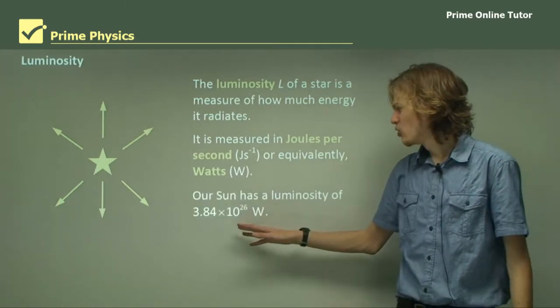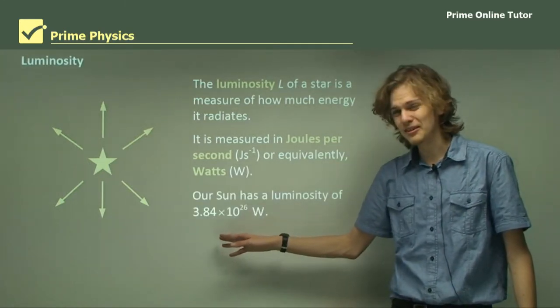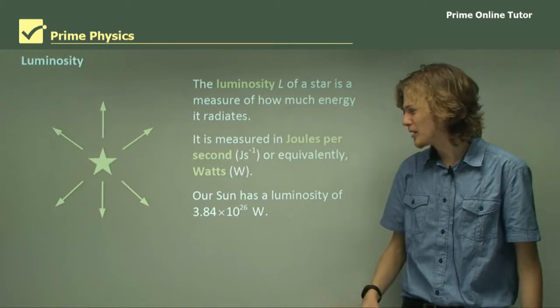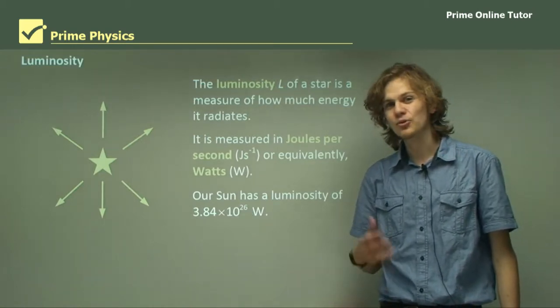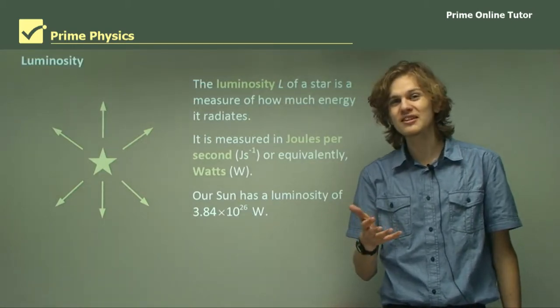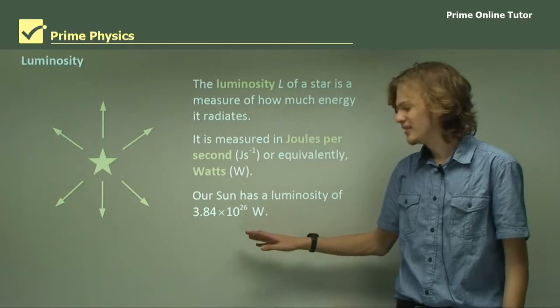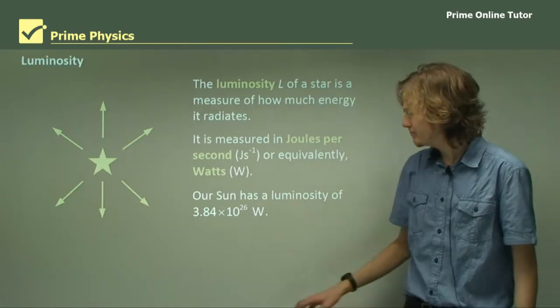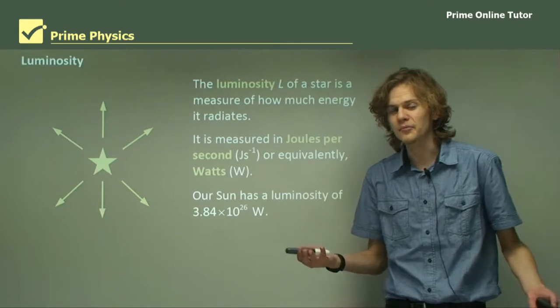Our Sun has a luminosity of 3.84 times 10 to the 26 watts. If you were to write this down, there would be 27 digits in this number. It's a pretty big number, but of course it's a star, so you'd expect it to be bright.